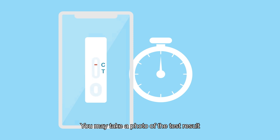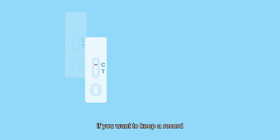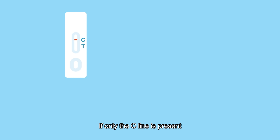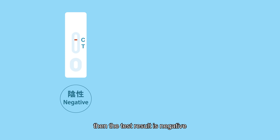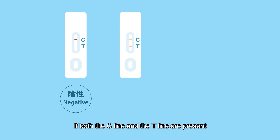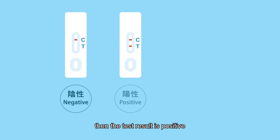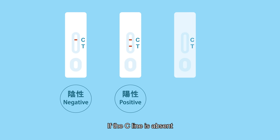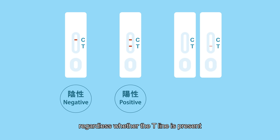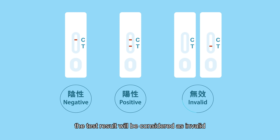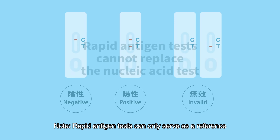You may take a photo of the test result if you want to keep a record. If only the C-line is present, then the test result is negative. If both the C-line and the T-line are present, then the test result is positive. If the C-line is absent, regardless whether the T-line is present, the test result will be considered as invalid and you should do another test with a new test kit.